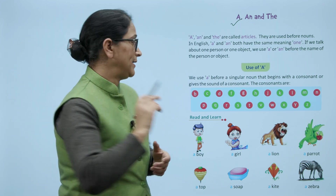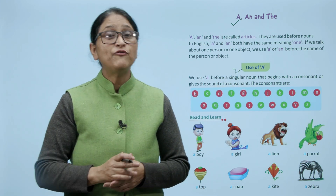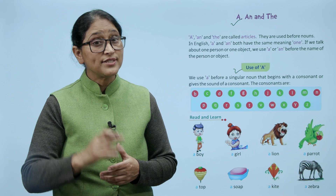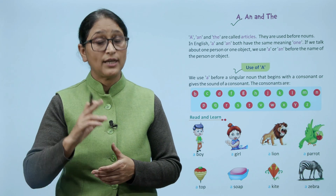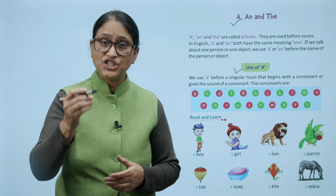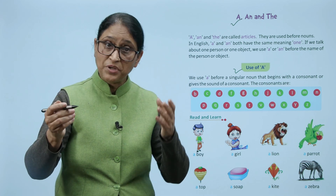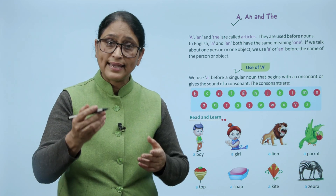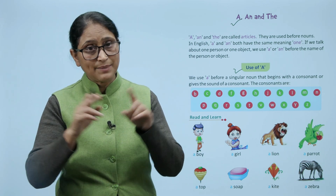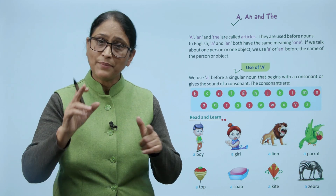Use of a. We use a before a singular noun that begins with a consonant or gives the sound of a consonant. The consonants are b, c, d, f, g, h, j, k, l, m, n, p, q, r, s, t, v, w, x, y, z. Ye sab consonant hai aur consonant sound deete hai. Toh in se pehle hum a ka use karte hai.